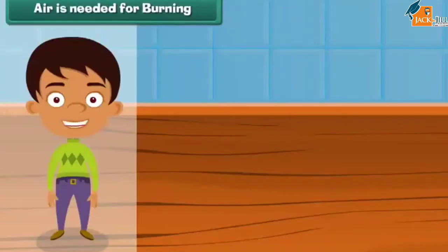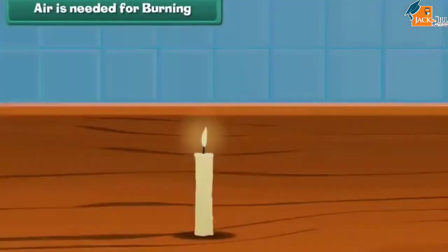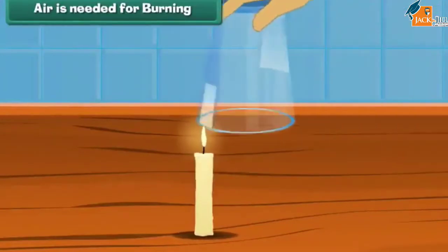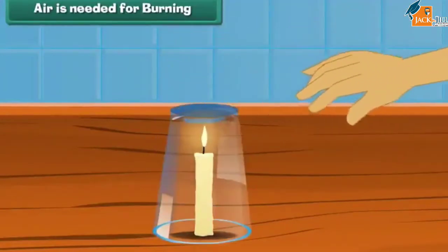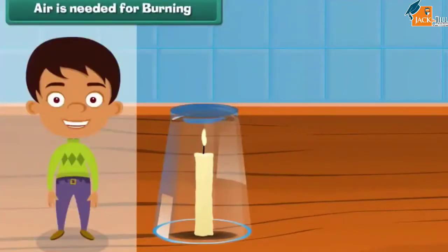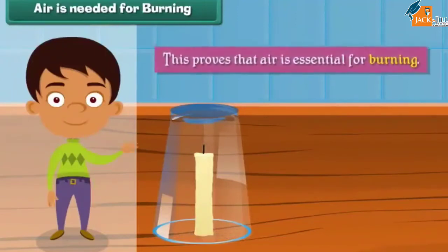Air is needed for burning. Let us perform an experiment. Light a candle, then invert a glass tumbler over it. This action cuts off the air supply to the burning candle. A little while later, the candle stops burning. This proves that air is essential for burning.